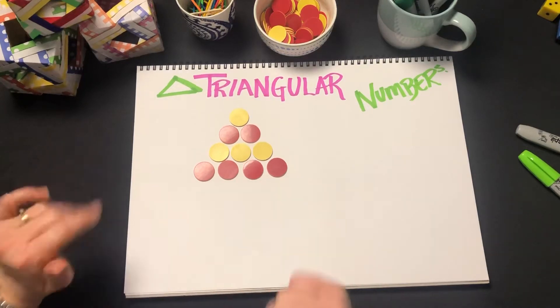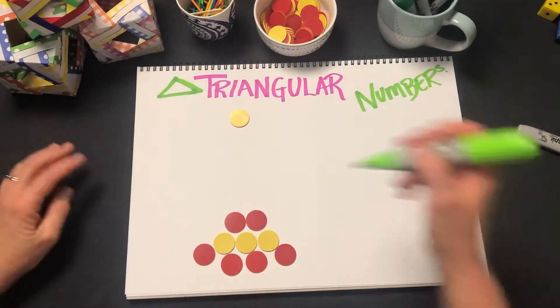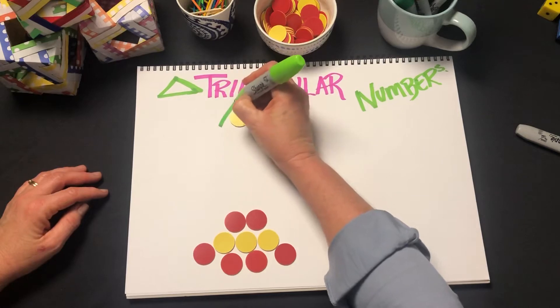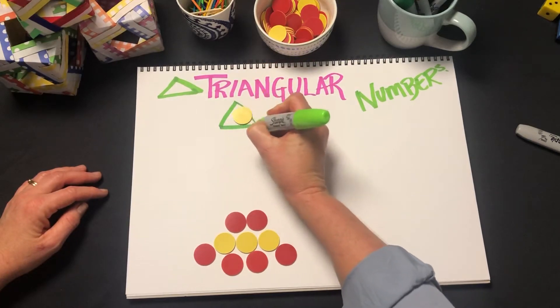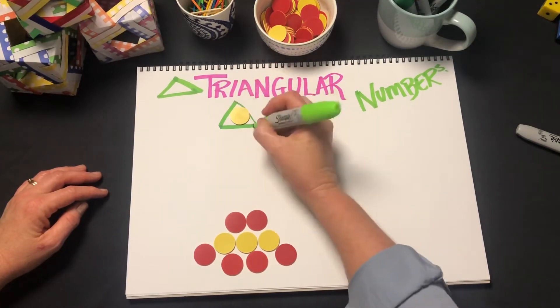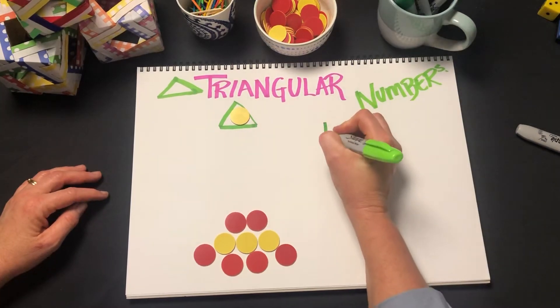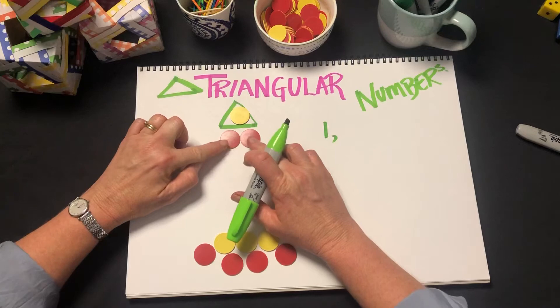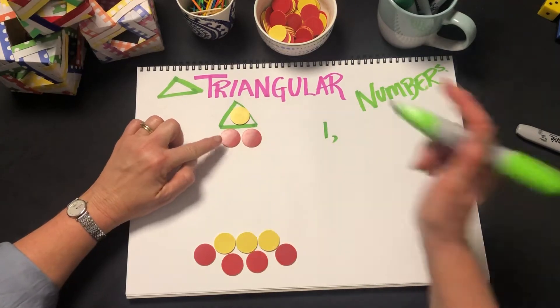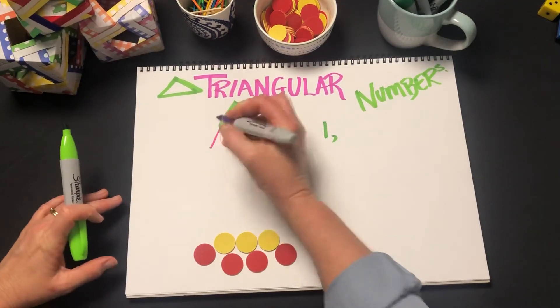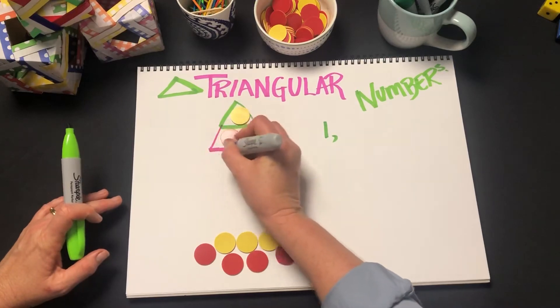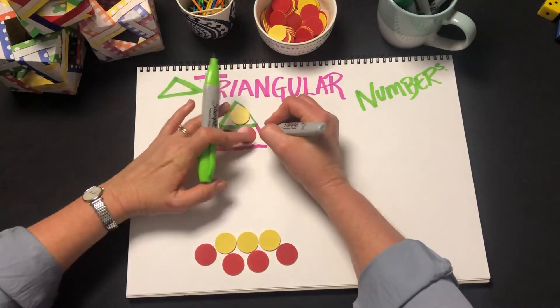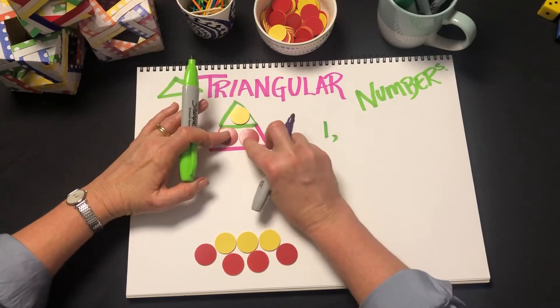So let's unpack that. We could form a triangle around one, so one is a triangular number. We added two to the bottom and we now have a larger triangle that is made up of a total of three counters.